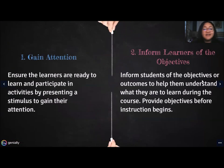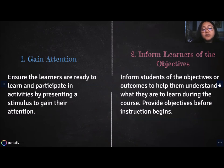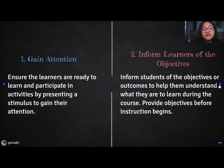The first event is Gaining Attention: ensure learners are ready to learn by presenting a stimulus to gain their attention. Teachers can stimulate students with novelty, uncertainty, and surprise, or pose thought-provoking questions. The second event is Inform Learners of Objectives: inform students of the objectives or outcomes to help them understand what they are to learn. Provide objectives before instruction begins. The teacher describes the required performance and criteria for standard performance to the students.